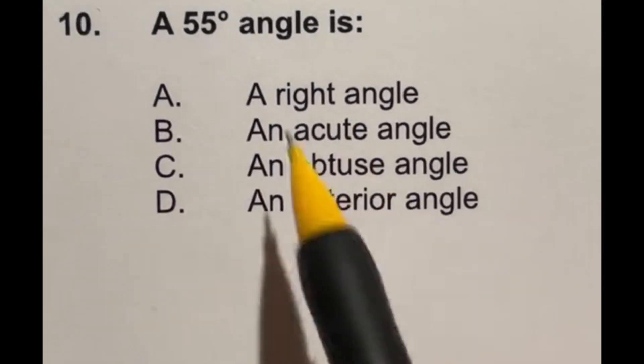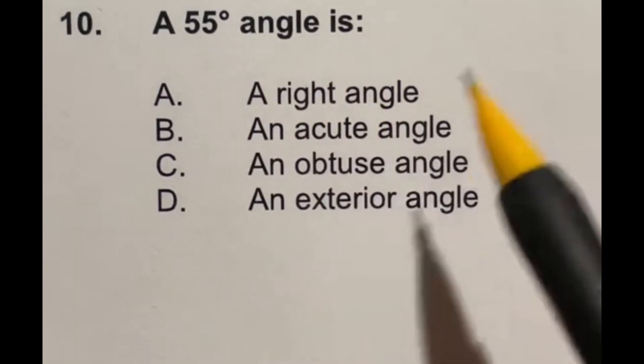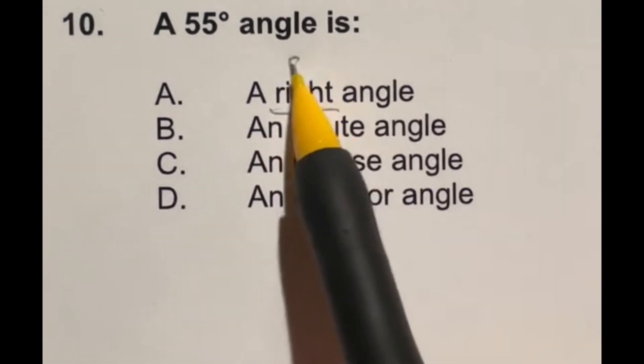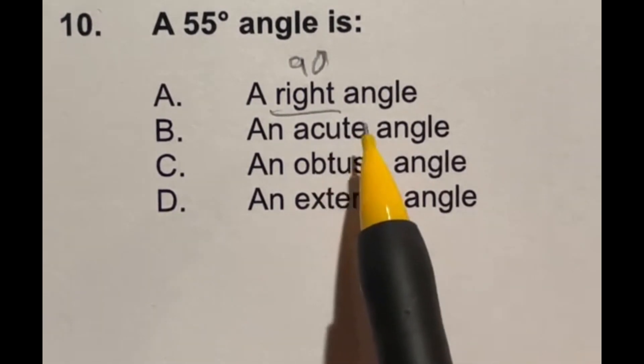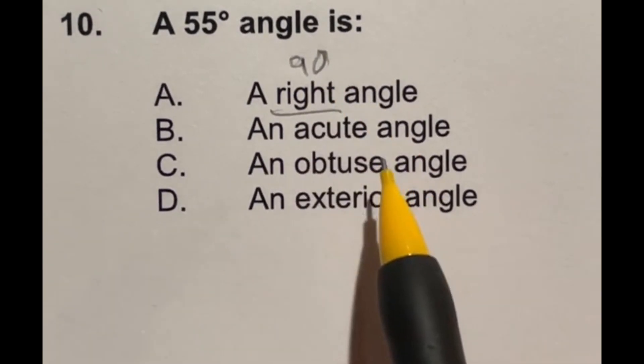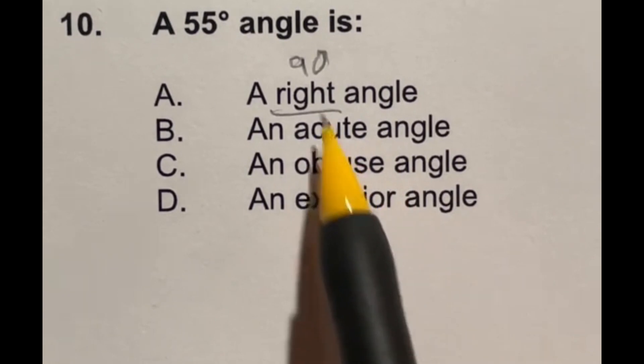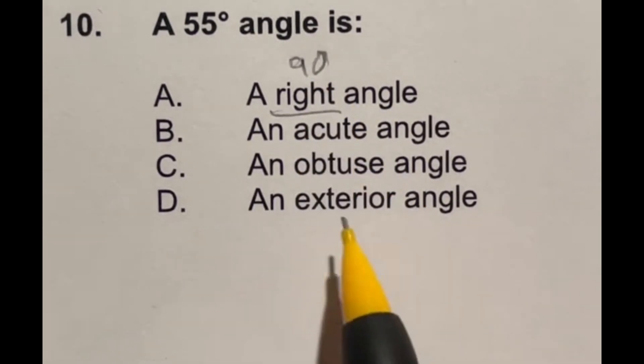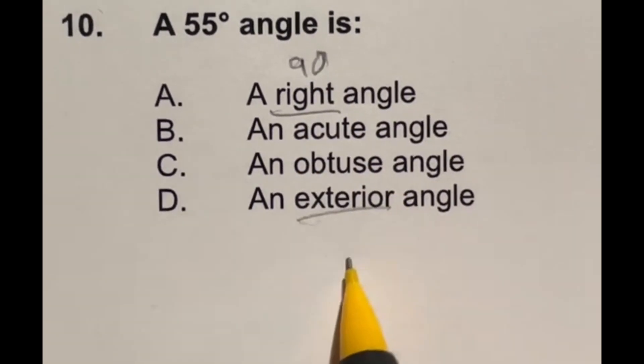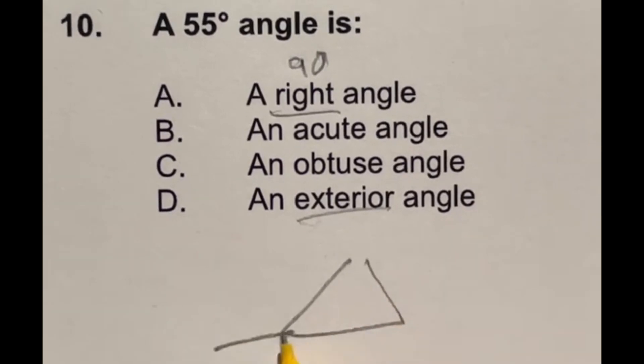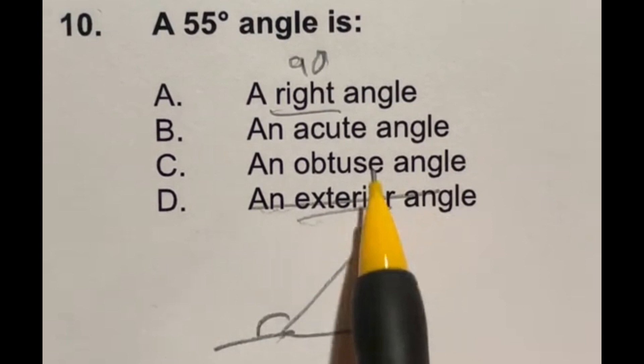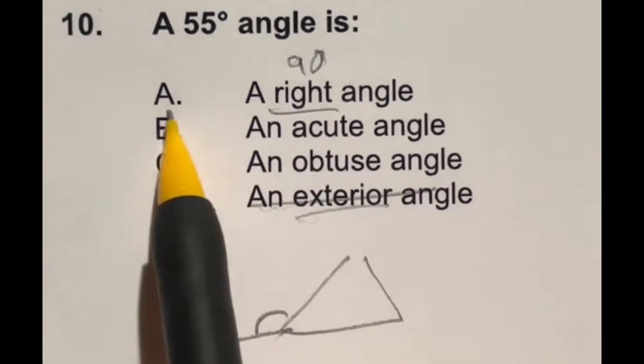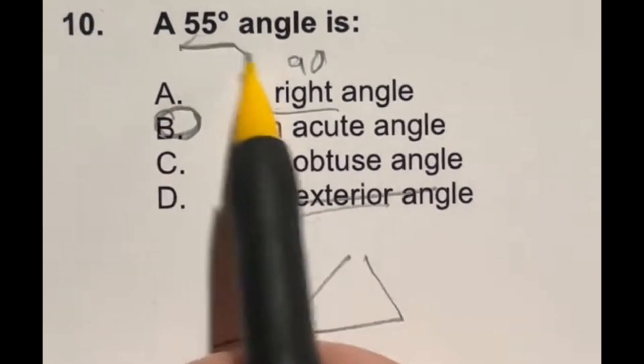More definitions for number 10 here. A 55 degree angle is what? A right angle is always going to be exactly 90 degrees. Acute angle is when you are less than that 90 degree, whereas an obtuse angle is when you are more than 90 degrees. An exterior angle has to do with if you have a triangle, it's like the angle on the outside. So that's not even going to be considered here. So the only one that we mentioned would be B, acute angle, because it's less than 90 degrees.